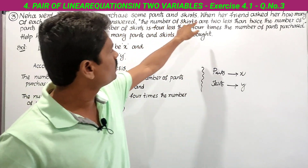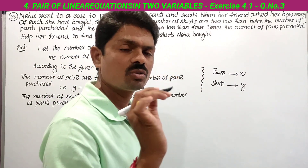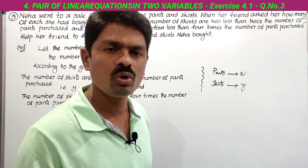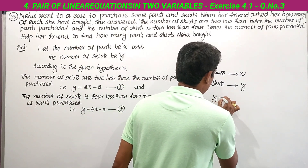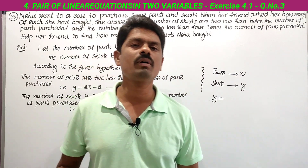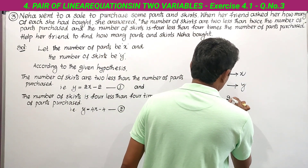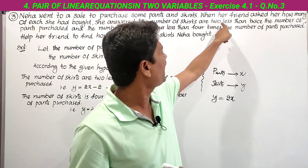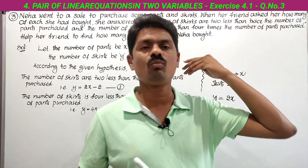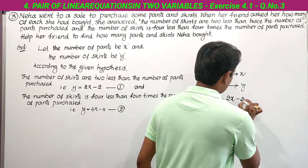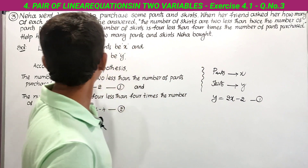The first relation: the number of skirts are two less than twice the number of pants purchased. The number of skirts is y. Twice the number of pants — the number of pants is x, so twice means multiply by 2, giving 2x. Two less than means we subtract 2, because 'less than' means subtract and 'more than' means add. So our first equation is: y = 2x − 2.